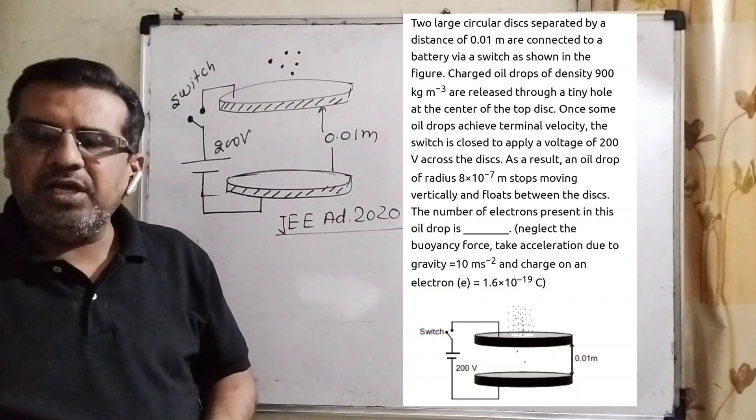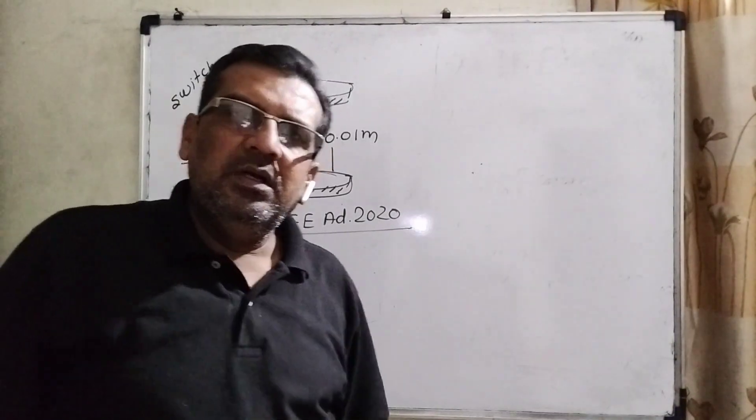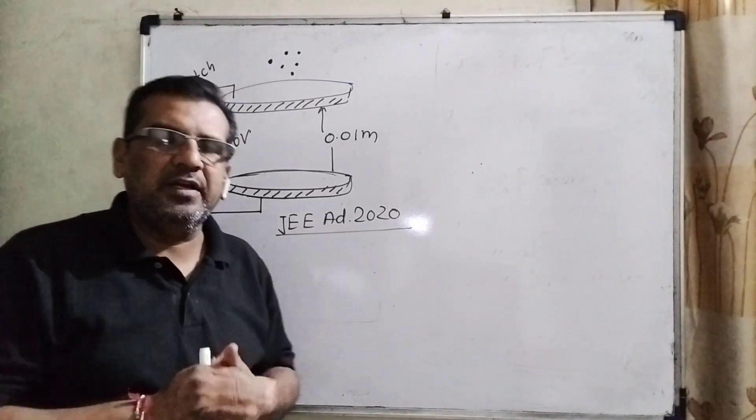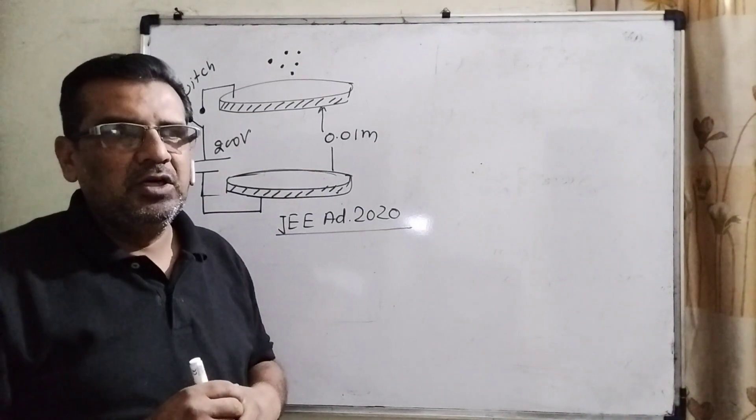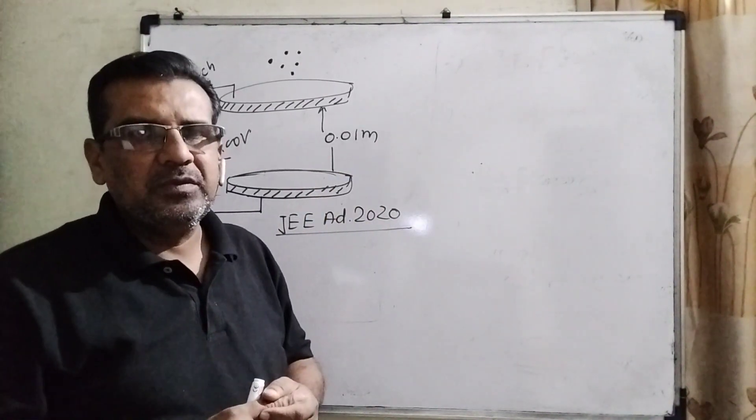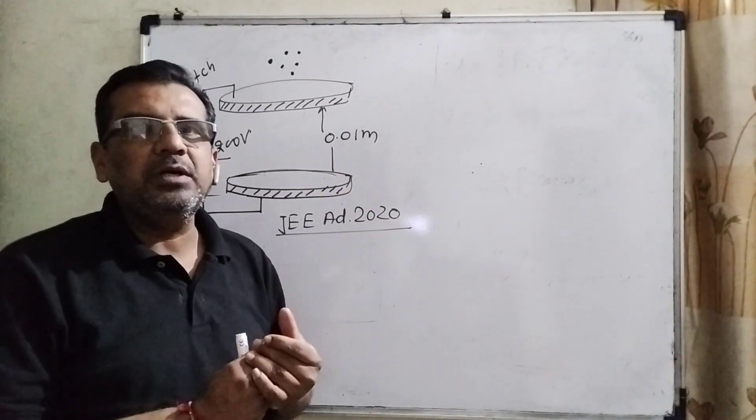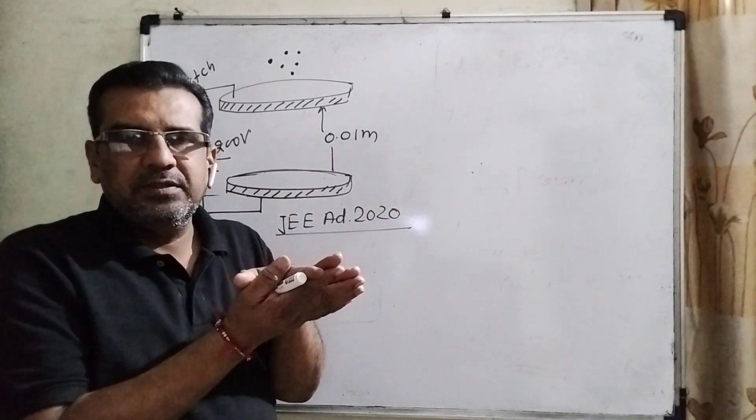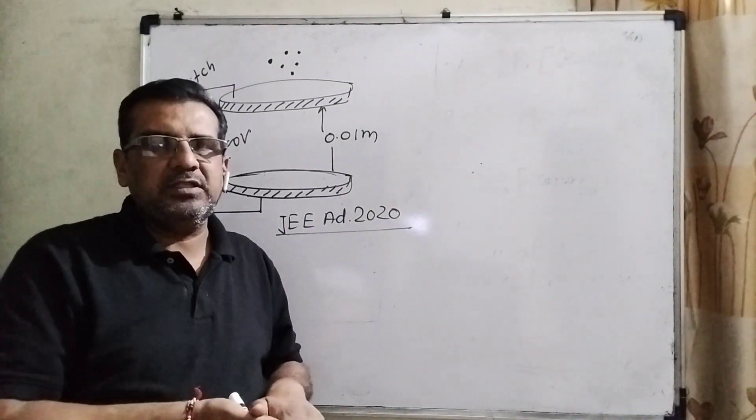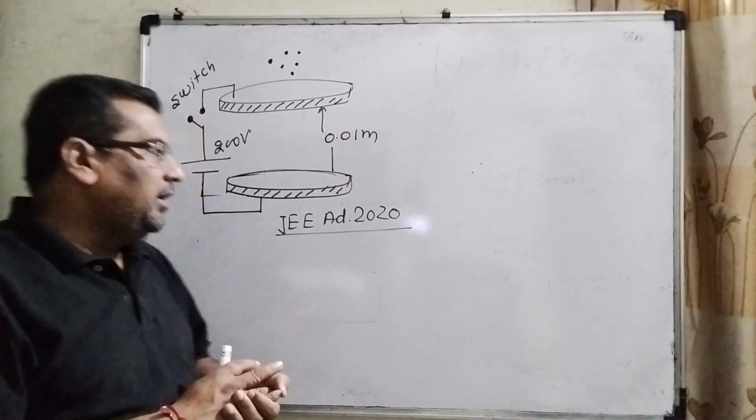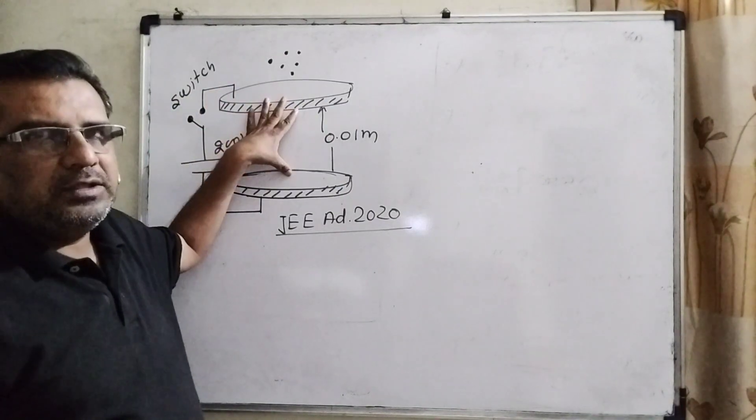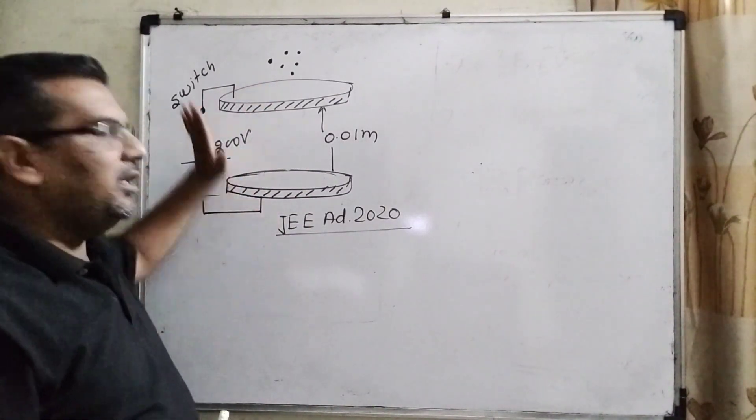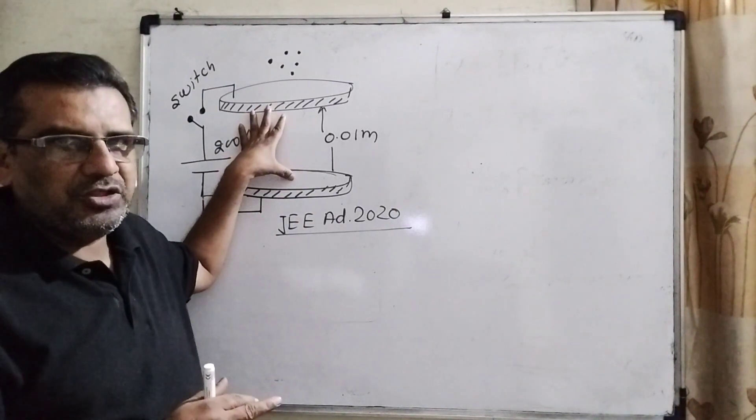This question is asked in JEE Advanced 2020. Generally this question is inspired by the Millikan oil drop method. You are well known about terminal velocity from last year. When any object is falling freely, initially its velocity gets increased due to the gravitational force, but after coming to the medium, some buoyancy force is applied on it and then some constant velocity falls. This constant velocity is called terminal velocity.